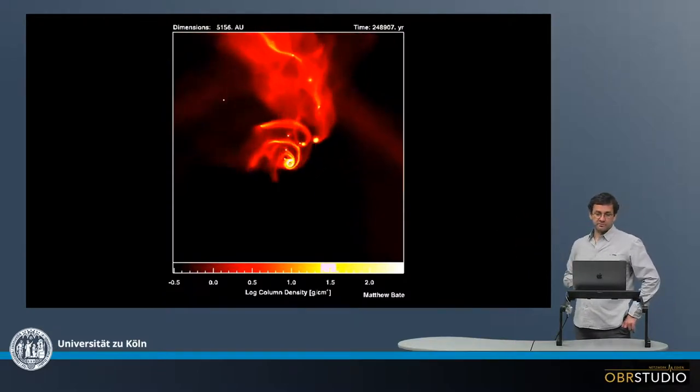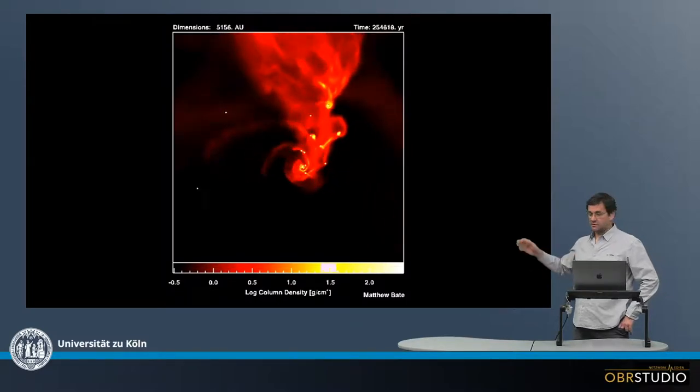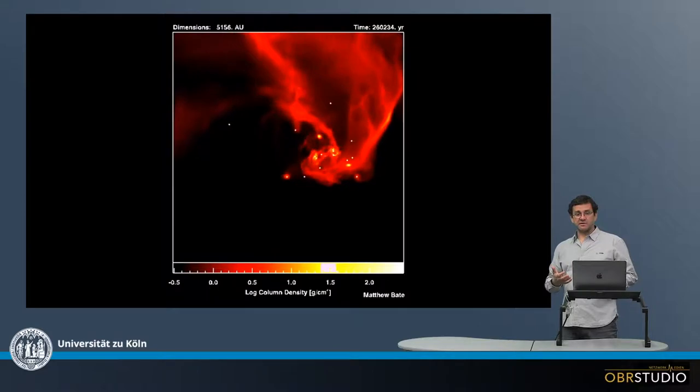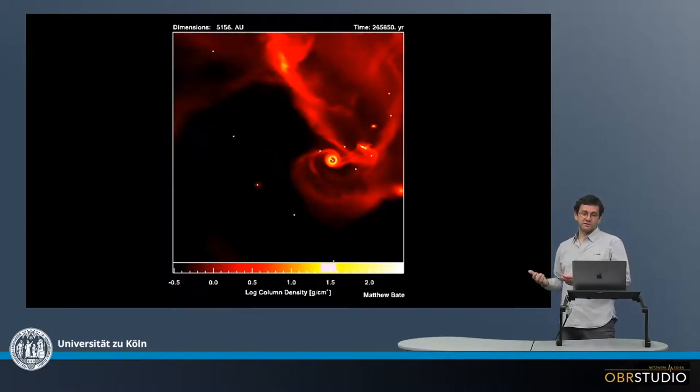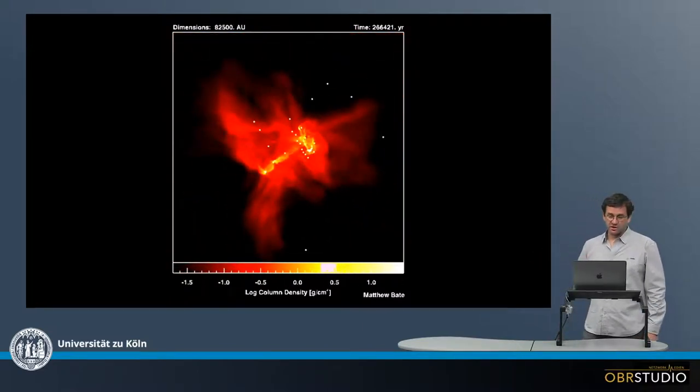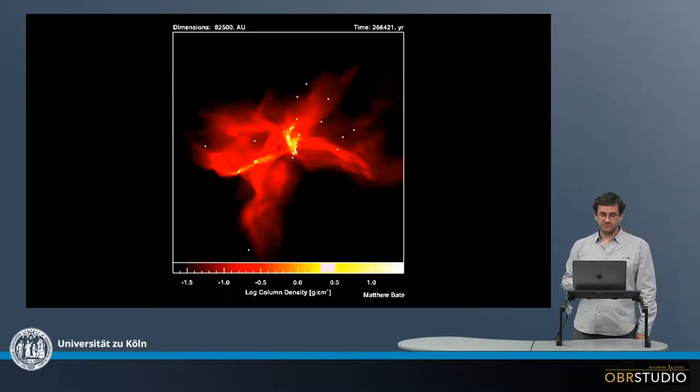So this is showing a couple of other features, and you can also see there's a lot of interaction between the stars, and that this kind of interaction also sometimes leads to the removal of disks around some stars, and then this is the final configuration here.